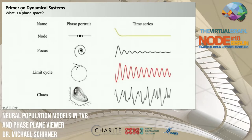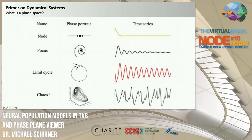Here is a selection of geometrical objects found in phase space: a node or fixed point, drawn as a closed circle with arrows pointing toward it, where the time series approaches a certain value and stays there; a focus, an inward-spiraling spiral corresponding to a damped oscillation; a limit cycle corresponding to a self-sustained oscillation; and chaotic patterns requiring at least three dimensions that cannot be classified as any of the above.